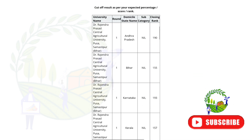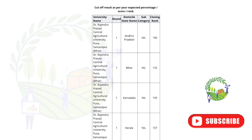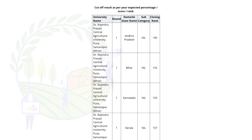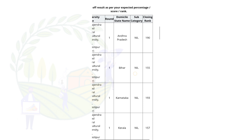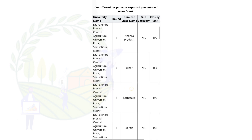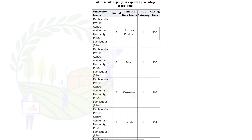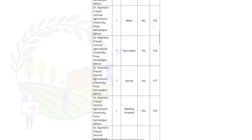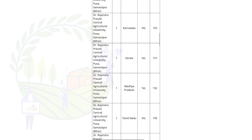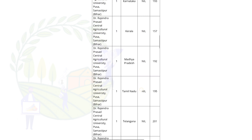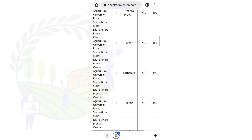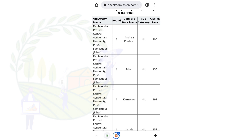So you can see these are the universities in round one. You can get Andhra Pradesh and Bihar universities; the closing rank is 190. Here you can see the universities and their closing ranks.